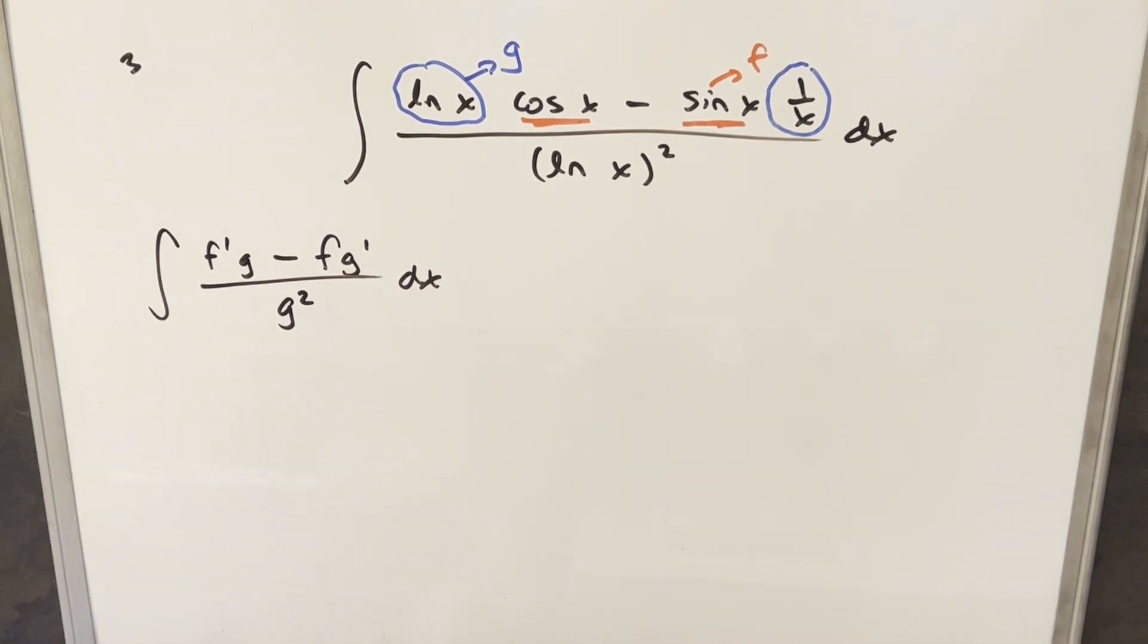And the reason I'm writing it out this way is because what we have here in the integral is just the quotient rule. So we have our quotient rule over here to the right, and of course this is exactly what we have here in the integral.